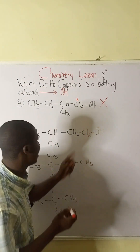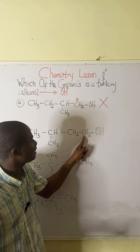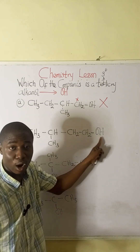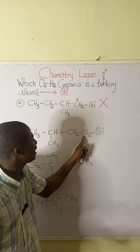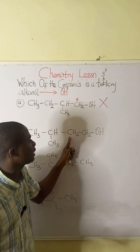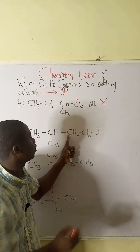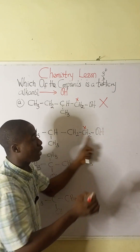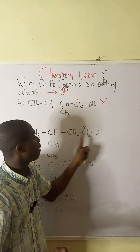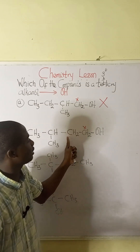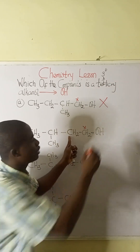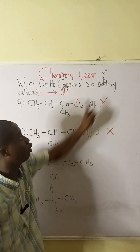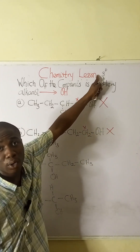Looking at option B, this is the carbon attached to the OH. How many carbon atoms is it directly attached to? Just one. So it is still a primary alkanol. Remember, we are looking for three — tertiary.